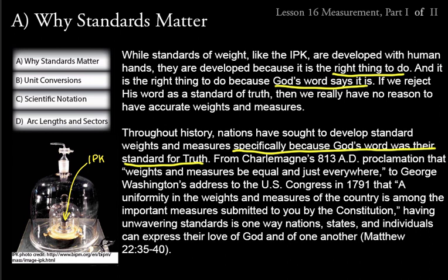We have standards for weights and measures — how we truly measure God's creation — and standards for how we're supposed to live that we find in Scripture. Charlemagne in 813 AD proclaimed that weights and measures be equal and just everywhere. George Washington's address to Congress in 1791 stated that a uniformity in weights and measures is among the important measures submitted by the Constitution. Having unwavering standards is one way nations, states, and individuals can express their love of God and of one another, caring by not cheating each other.